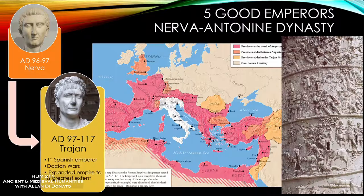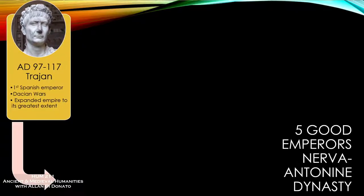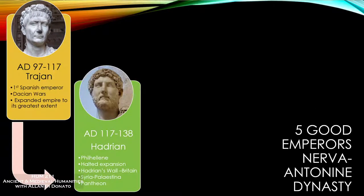Trajan follows suit and adopts his successor — a guy named Hadrian, from 117 to 138. Let me point out Roman portraiture one more time. We've talked about Roman art following the model of the Greeks, especially with Augustus adopting that classical idealistic style. You also have that tradition from the Republic of Roman realism, inspired by family portraiture and the death masks they would make of deceased relatives.